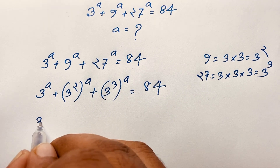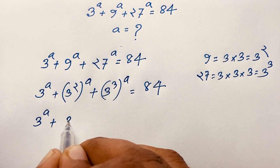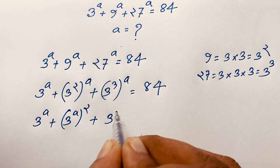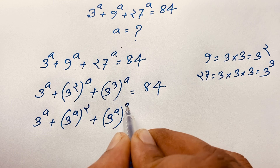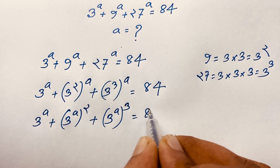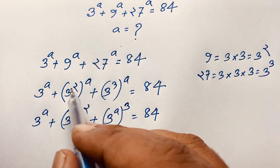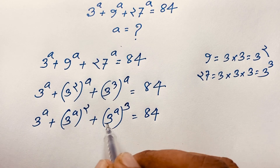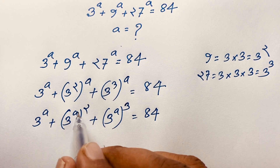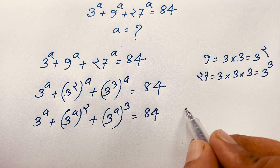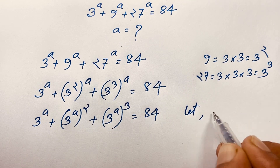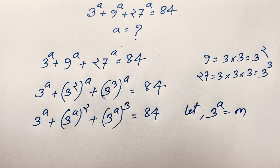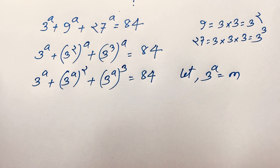Applying the exponential law, this becomes 3^a plus (3^a)^2 plus (3^a)^3 equals 84. Now 3^a is common throughout, so let 3^a equal m.